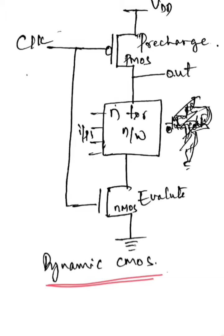The dynamic CMOS will be having a clock signal as input to the precharge PMOS transistor and to the gate of the evaluate transistor of NMOS.